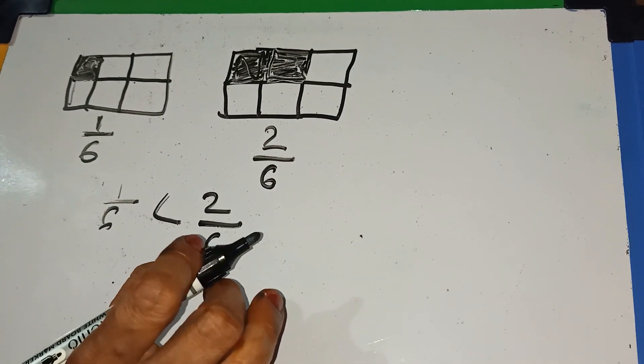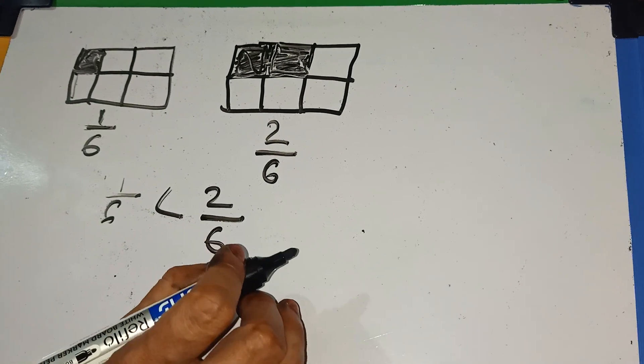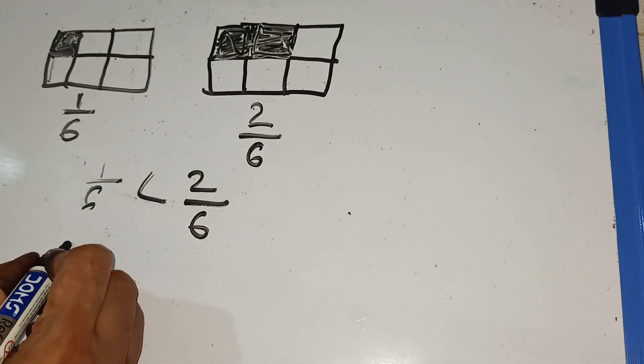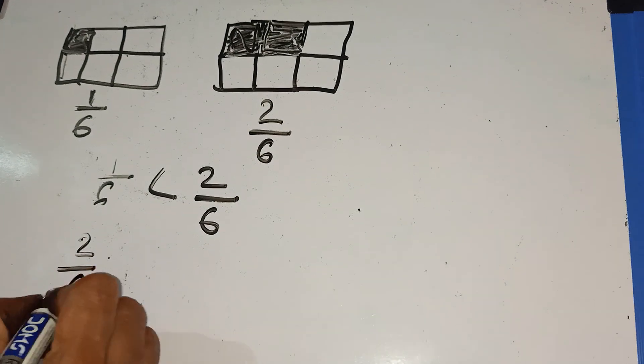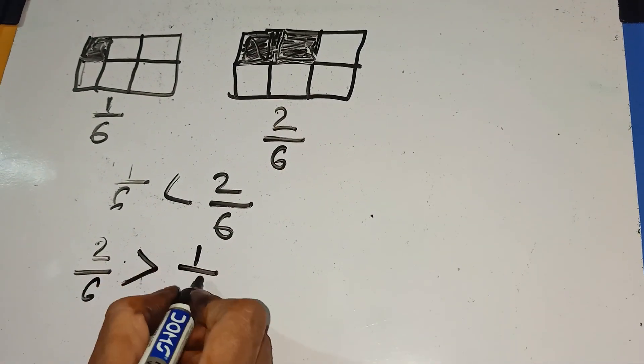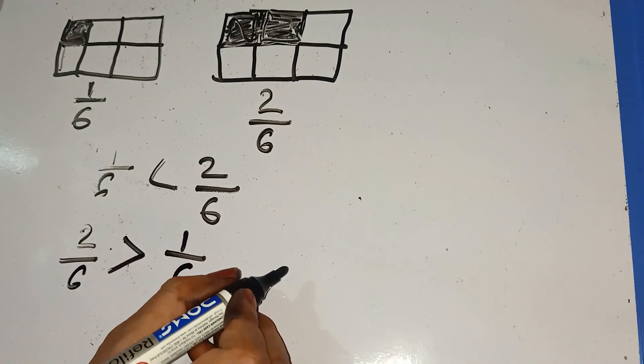Simply, you can do. So, you can write like this. Or, you can write like this. 2 by 6, bigger than 1 by 6.